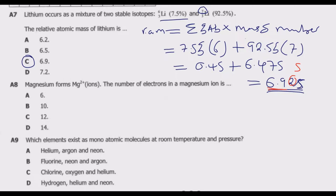We move to question 8. Magnesium forms magnesium 2+ ions. The question asks for the number of electrons in a magnesium ion. A positive charge ion means the atom has lost some electrons, and the magnitude of the charge tells us how many electrons were lost. So magnesium has lost 2 electrons, which is why it carries a net positive charge. Let us go to the periodic table to find the proton number of magnesium.